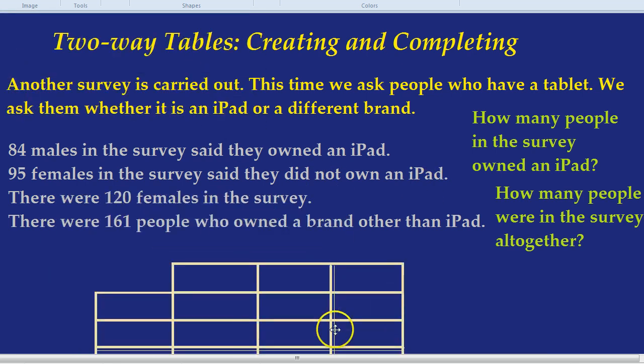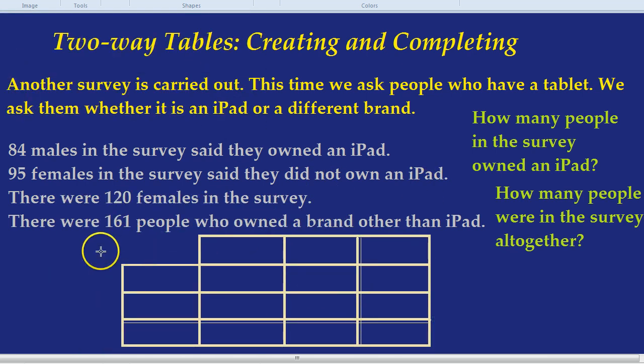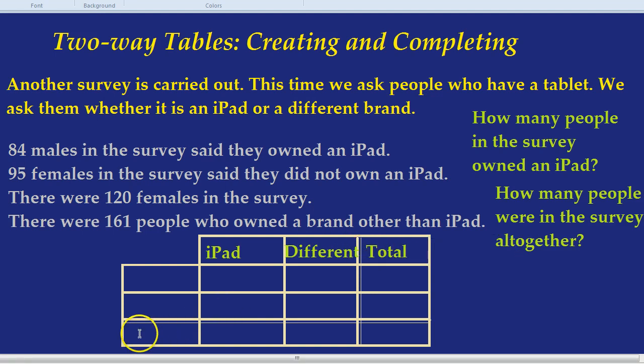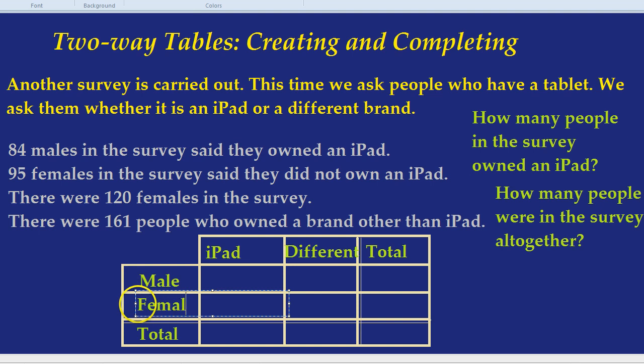What we do is we quickly fill in the columns. Let's say this column is an iPad. This column is a different brand. So any other different brand. This column is always total. This bottom row is going to be total. This row is male. And this row here are females.